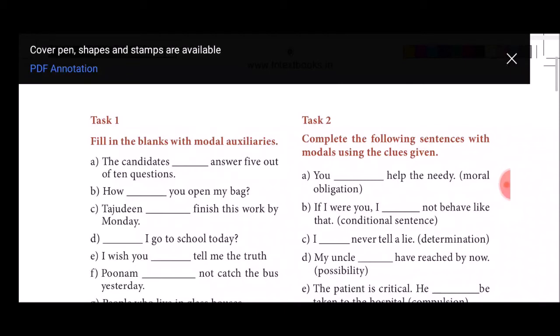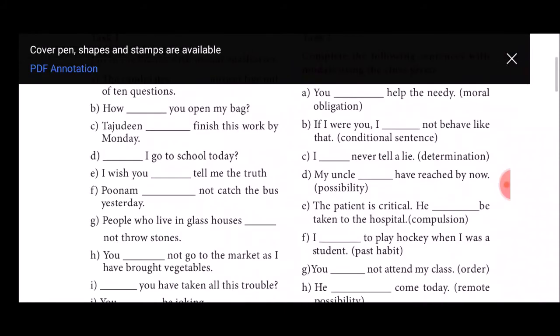B: If I were you I dash not behave like that. Conditional sentence. That is would. If I were you I would not behave like that. C sentence: I dash never tell a lie. Within bracket determination. That is I will never tell a lie.